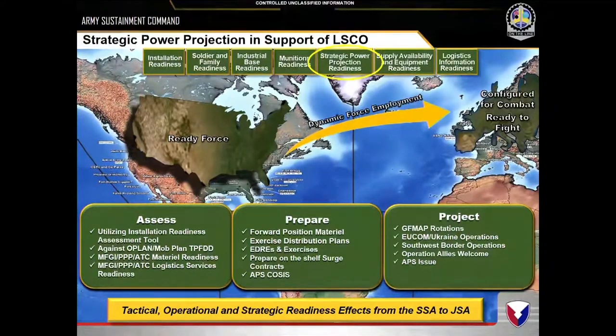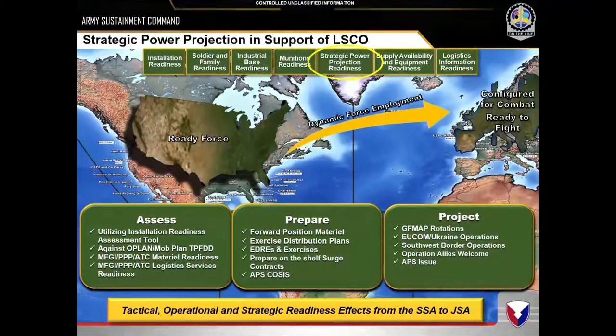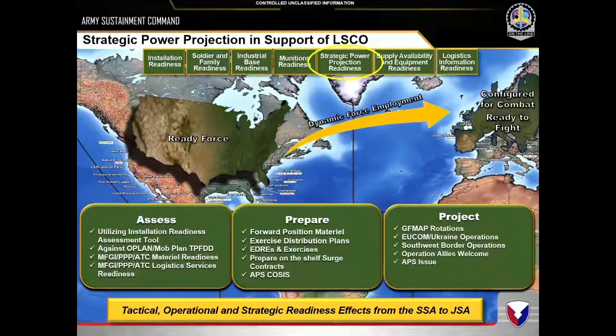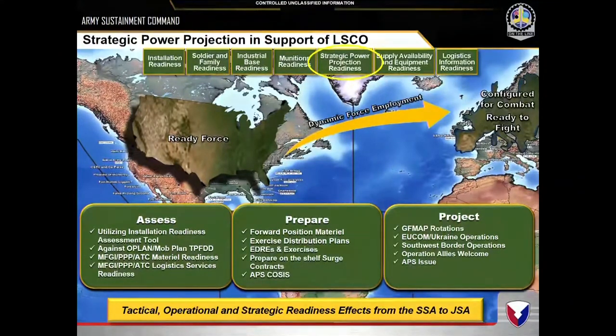For every one of these assessments when going out to those installations, we have what we call contracts on the shelf. We have completely developed the PWS — every one of IMCOM's requirements, FORSCOM's requirements, and ASC's requirements are already built in. It's an established contract; we just haven't pulled the trigger because that would come with congressional mobilization money. But those are ready so we have cut about 60 days off the ramp-up time for an installation's ability to project power and surge.